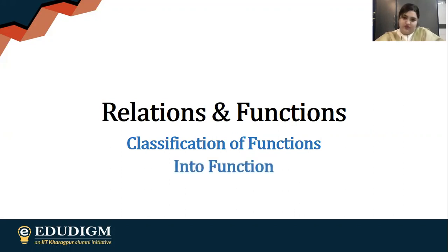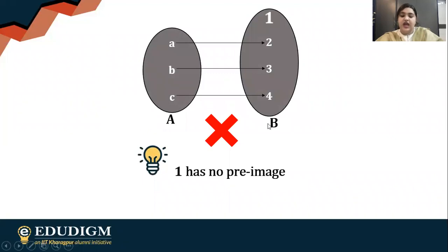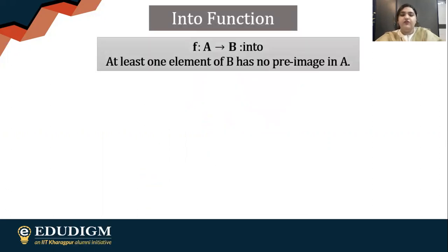In this video, I'm going to talk about into functions. We already know onto functions, right? For onto functions, you need each and every element of B having a pre-image. Unfortunately, in this case, one element does not have a pre-image at all, so it's not an onto function. These kinds of functions are actually into functions. This is the reverse concept. Mathematically, if you find at least one element of B which has no pre-image in A, this will be an into function.